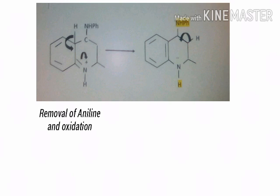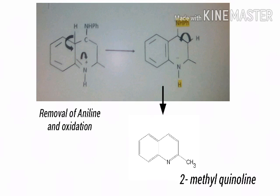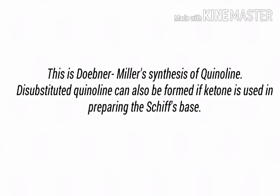Intramolecular rearrangements take place, and removal of aniline and oxidation of hydrogen give us 2-methylquinoline. Disubstituted quinoline can also be formed if a ketone is used instead of aldehyde while forming the Schiff base.